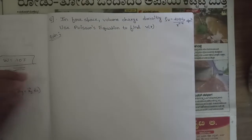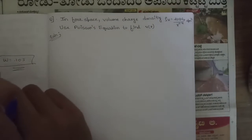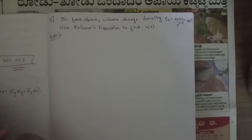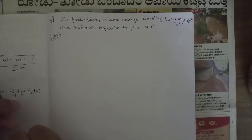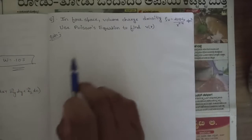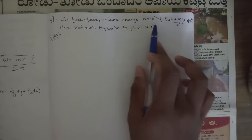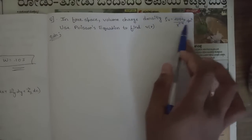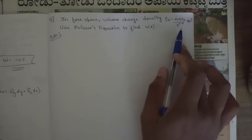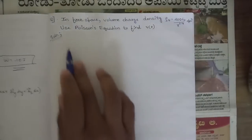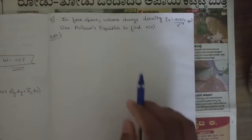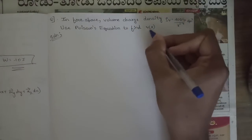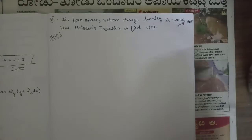Hello everyone, welcome to this new session. In this session we are going to solve a few problems related to Poisson's and Laplace equations. The first question is: in free space, the volume charge density ρ_V is given as 200ε₀ divided by r to the power 2.4 coulombs per meter cubed. Using Poisson's equation, we need to find the value of V, or V(r).